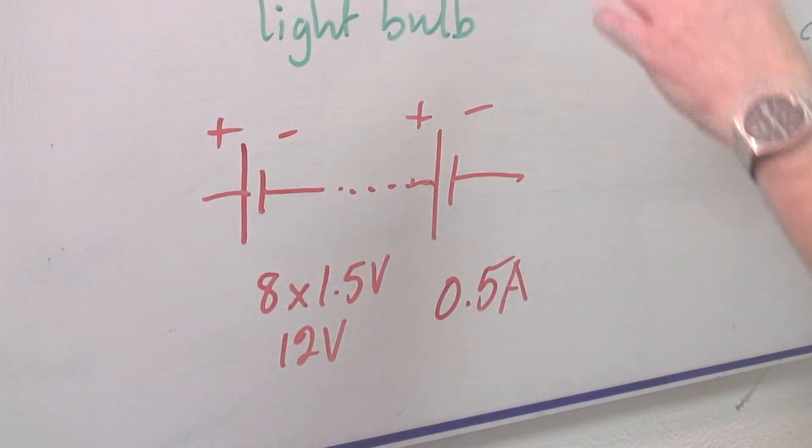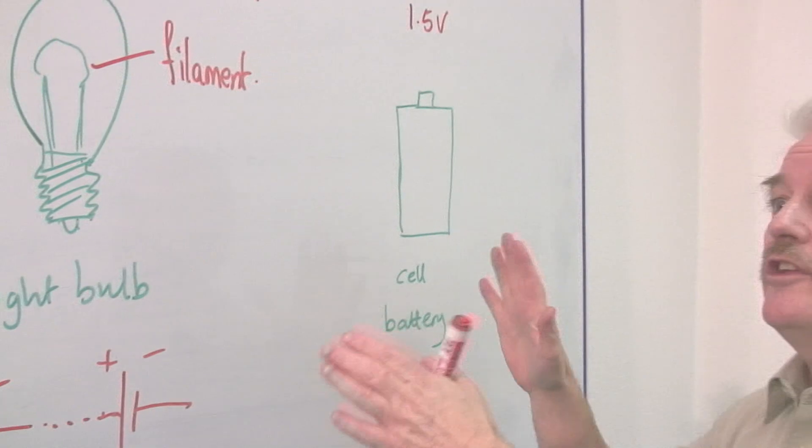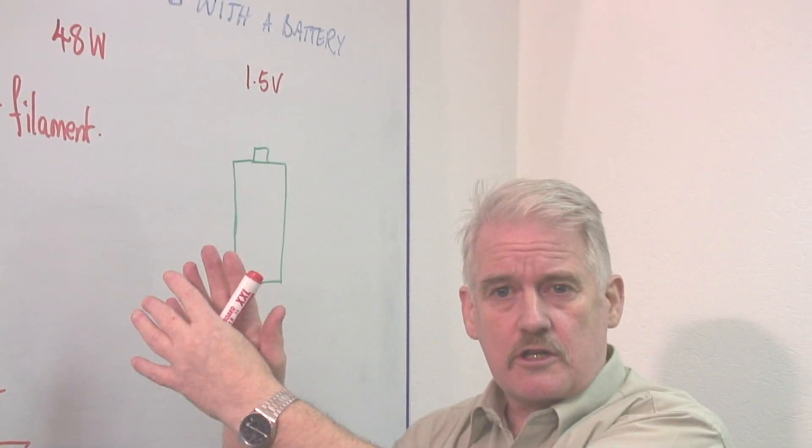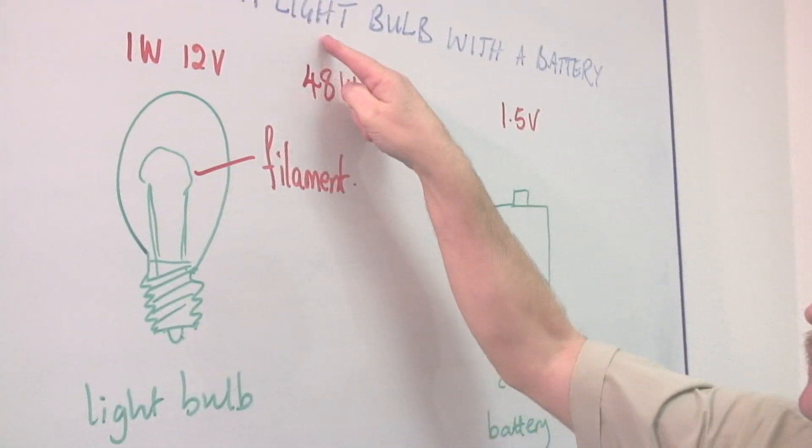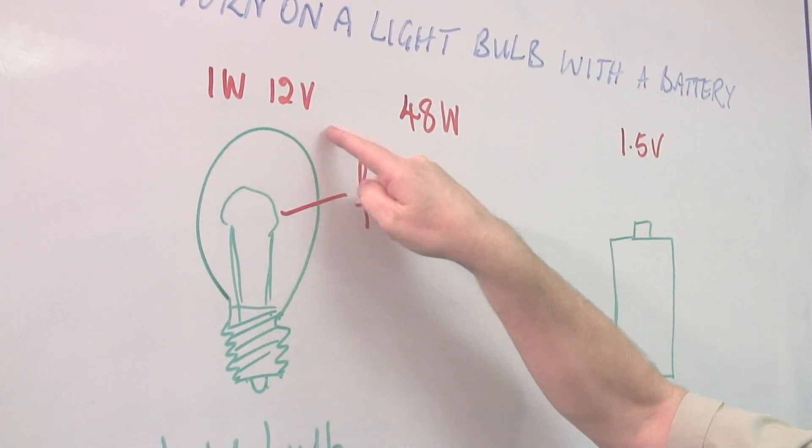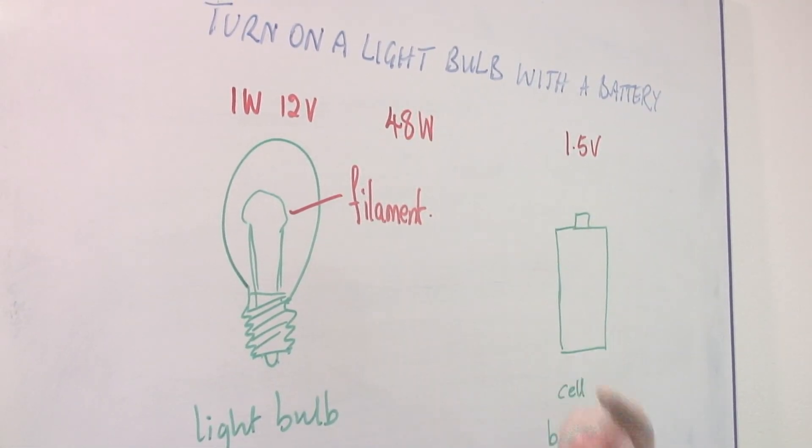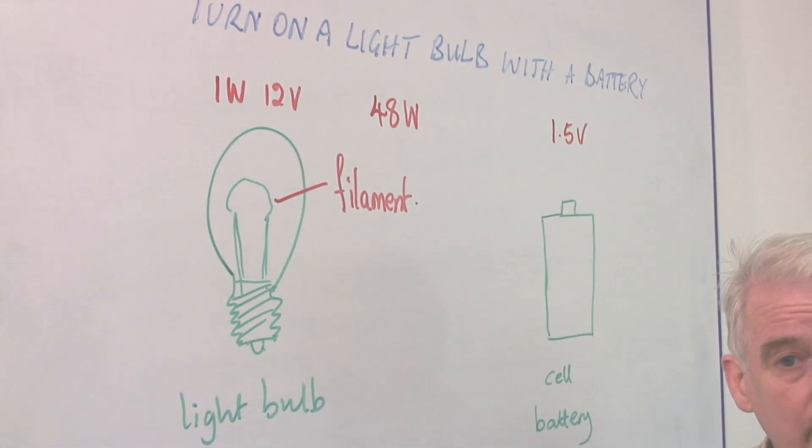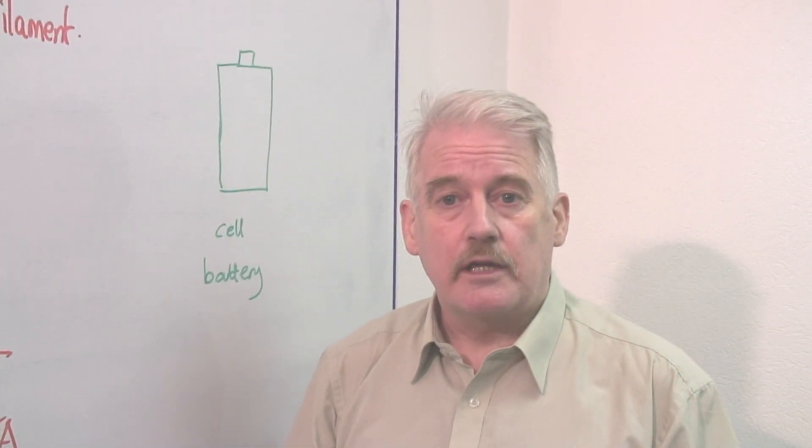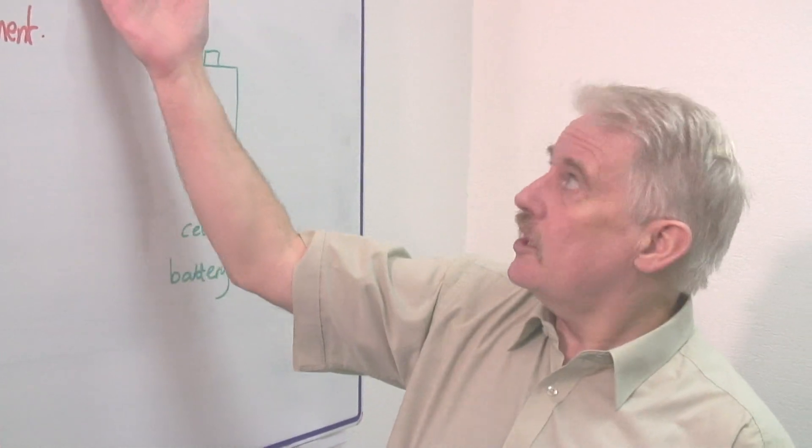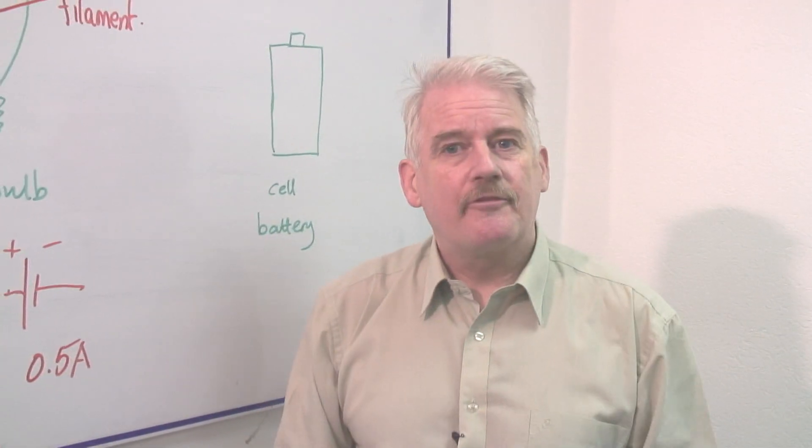So turning on a light bulb with a battery is more than just matching the voltages. You have to look at the currents too. If the power is big, even if the voltage is small, if the power is big, then you're going to have a big current. And that will mean that you need a more powerful battery. So there you are, turning on the light bulb with a battery in simplified form.